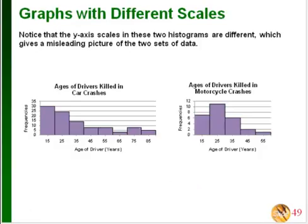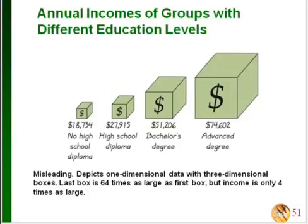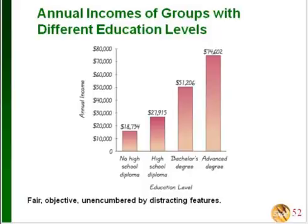Another thing to look out for is graphs with different scales. For our ages of drivers killed in car or motorcycle crashes, the car accident histogram's vertical axis goes up to 35 while the motorcycle histogram only goes up to 12, making direct visual comparison misleading. Pictographs — graphs using drawings or pictures — can also be very misleading. When a cube is used to represent values, its three-dimensional nature means a bigger side length makes one value look far larger than another, exaggerating differences. A simple bar chart would give a more accurate and fair representation of the same data.